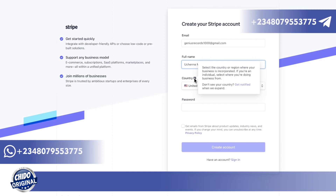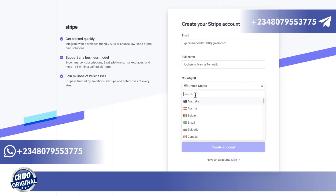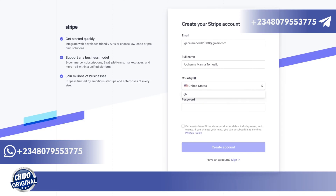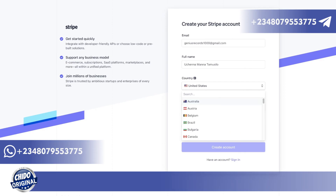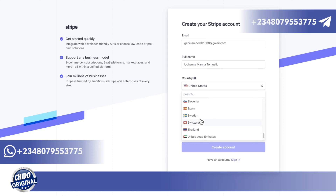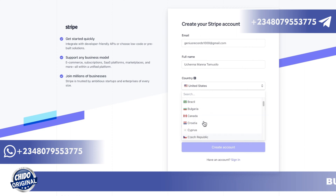You'll need to submit some government ID or information so they know your business is registered. If you're an individual, select where you are going to do business from. Unfortunately, there's no option for Nigeria, Ghana, South Africa, or other African countries here. The available countries include Australia, Belgium, Brazil, Bulgaria, Canada, Switzerland, the UAE, the UK, and the United States — those are the only ones available.